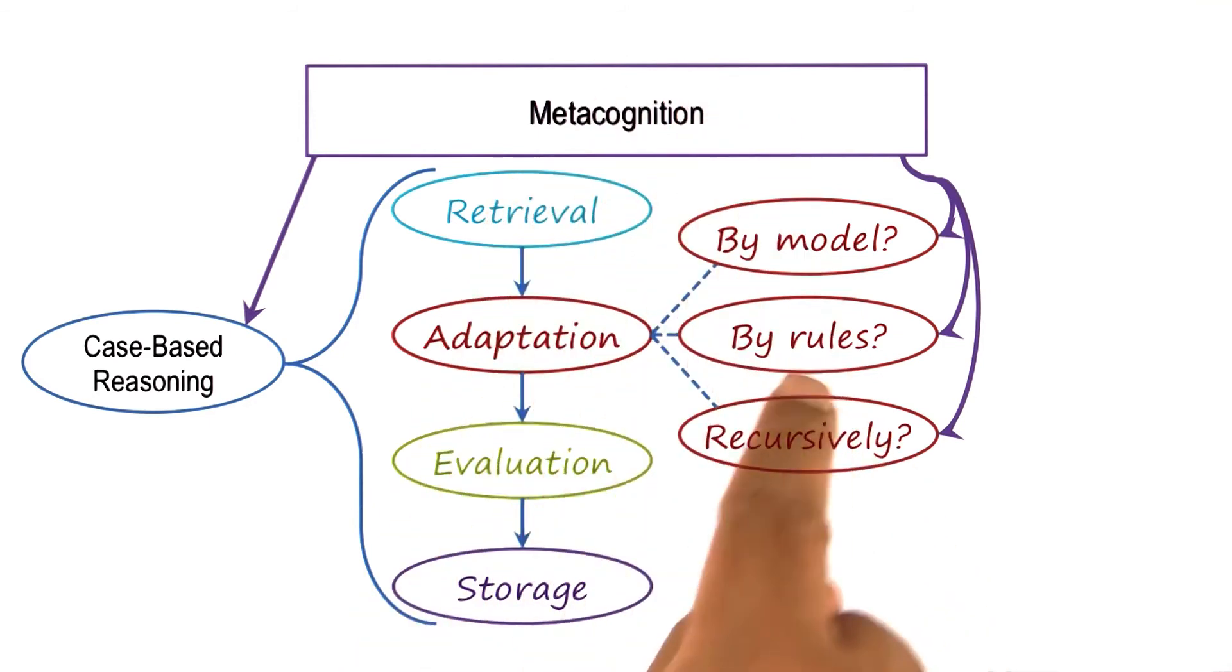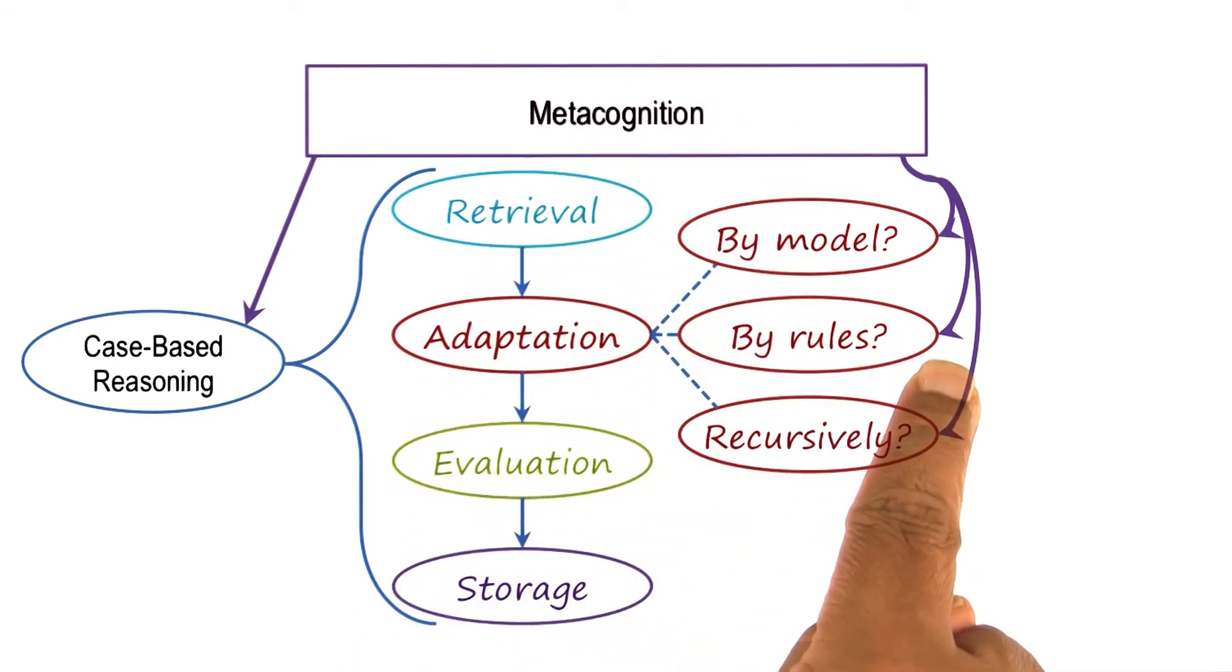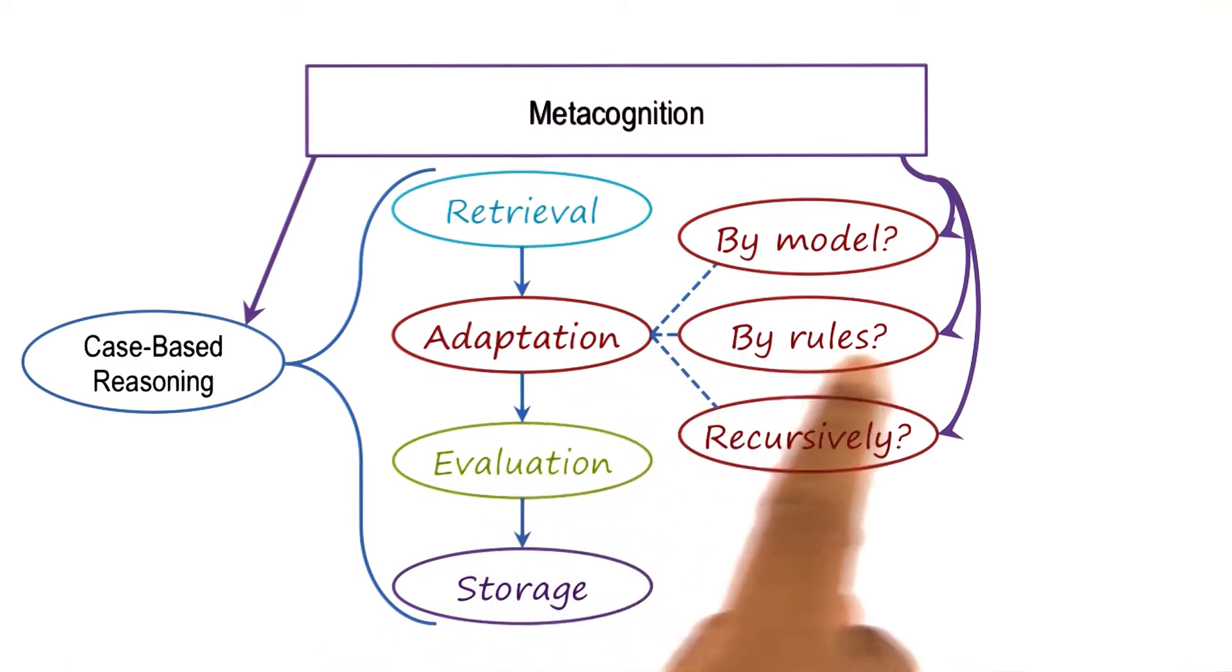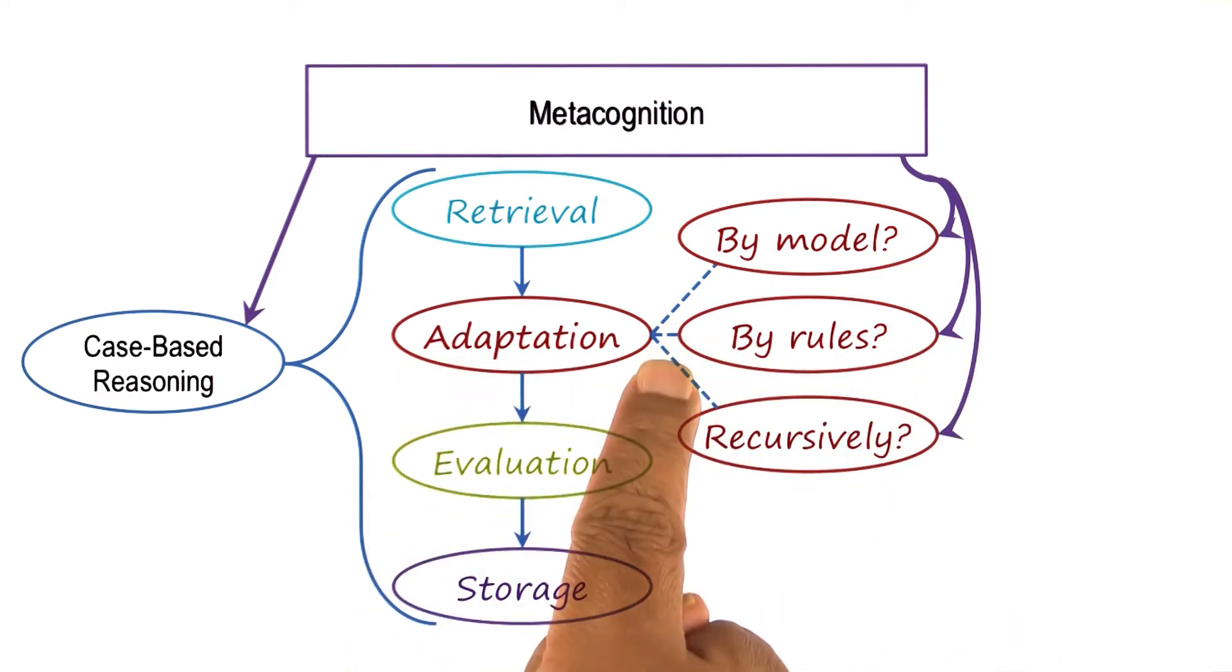If metacognition picks the method of rule-based reasoning, then note, the metacognition has shifted from the method of case-based reasoning overall to the method of rule-based reasoning for a subtask of case-based reasoning.